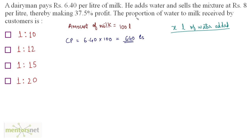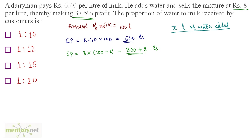When x liters of water are added, the total amount becomes 100 plus x liters. The selling price at Rs. 8 per liter gives a total selling price of 8 times (100 plus x), which equals 800 plus 8x. We are given a profit percentage of 37.5%, so: 37.5% equals (selling price minus cost price) divided by cost price times 100, giving us (800 plus 8x minus 640) divided by 640 times 100.